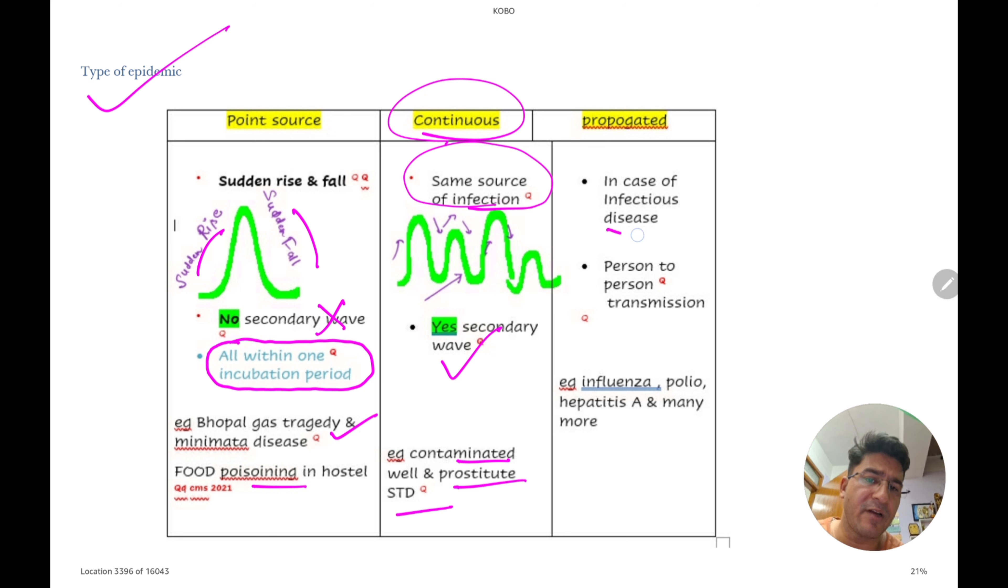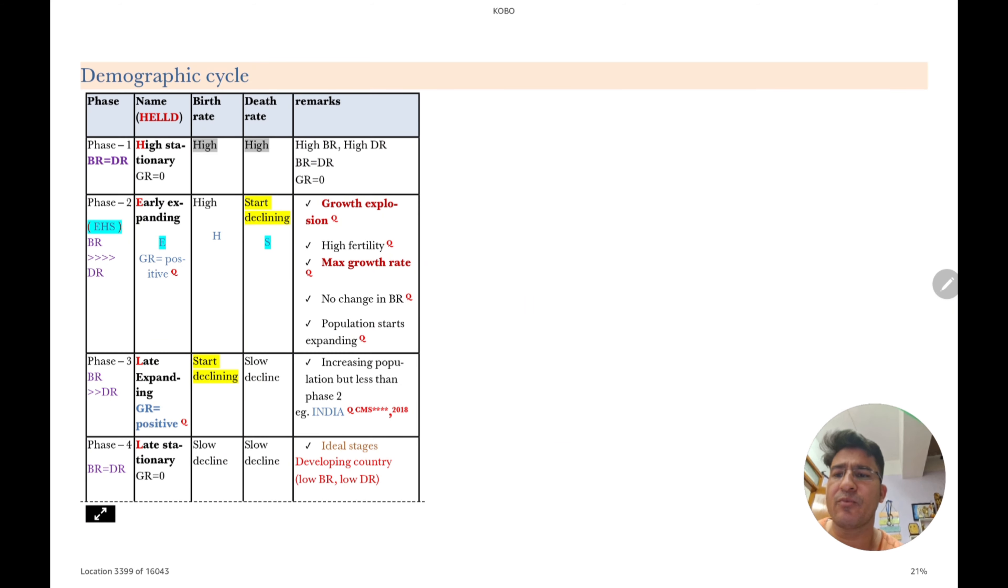Now propagative. Propagative ka matlab hota hai person to person infection. Jaise hepatitis A hai, polio hai. To yeh bahut normal hai. Koi bhi aapse puchha hai person to person infection ho raha hai. To samaj jao, this is propagative. So answer hai, easy hai. Question puchaye gaya hai.